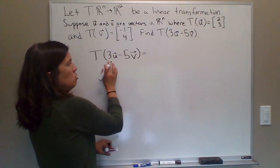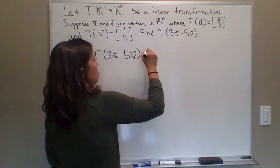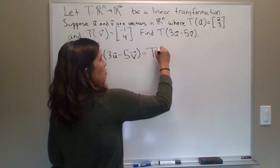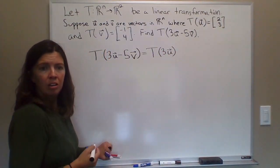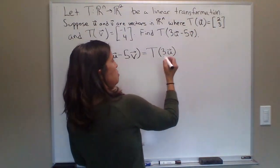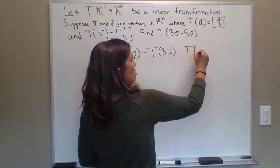So what we can do if we've got a difference here, 3u minus 5v, thanks to properties of linear transformations, we can split this up: T(3u) minus T(5v).